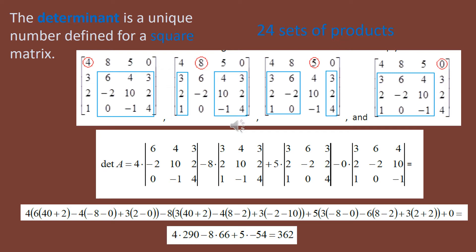Again, it's the sum of all products possible in which the factors are in different rows and different columns, and there's a pattern of whether or not a product should be considered positive or negative. You then add all of those results, and in this case it gave us 362.